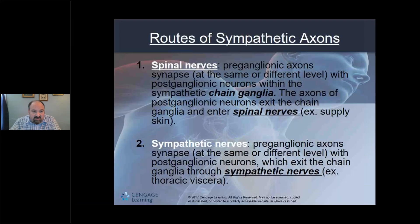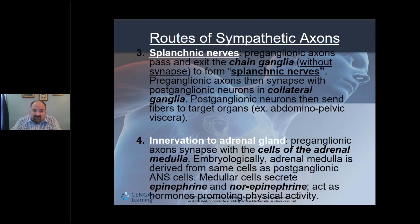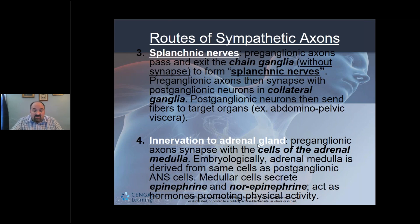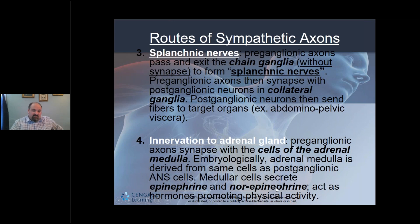Preganglionic axons travel from the spinal nerves to the chain ganglia. The postganglionic neuron then exits to the target — in the case of the sympathetic division, this can go to the adrenal glands, which release adrenaline (aka epinephrine) and noradrenaline (aka norepinephrine). The adrenal glands sit on the superior poles of the kidneys.